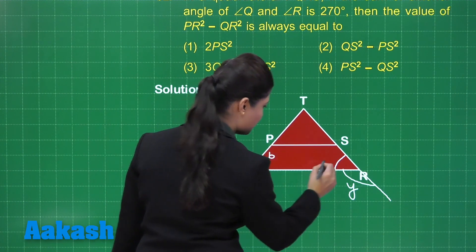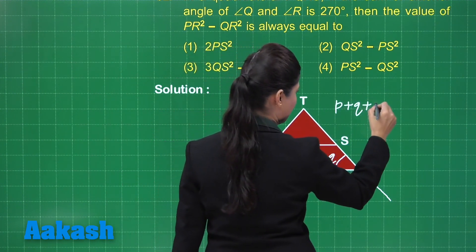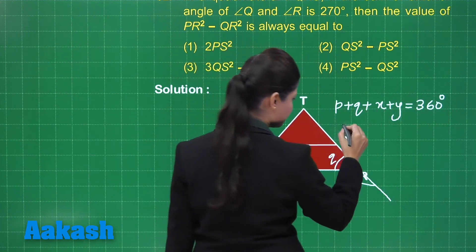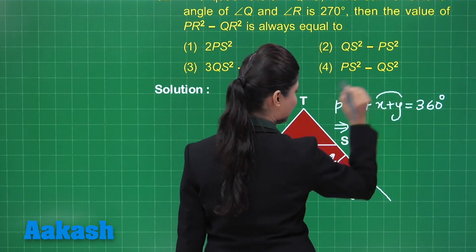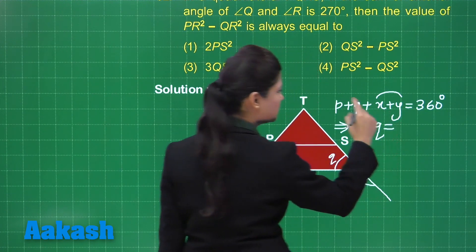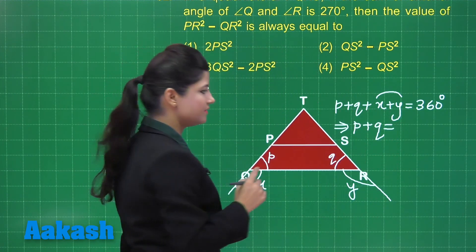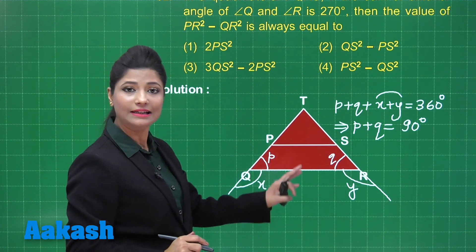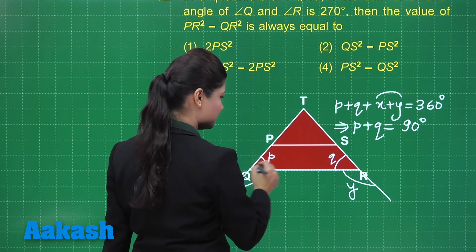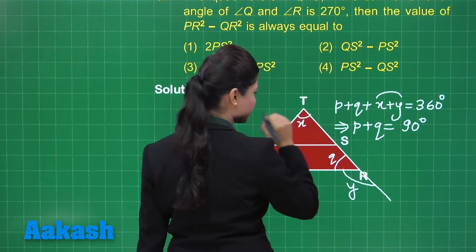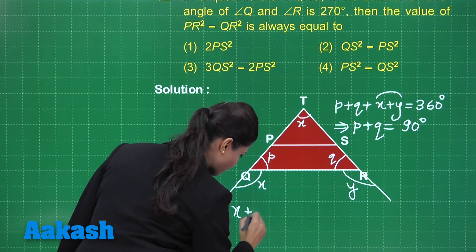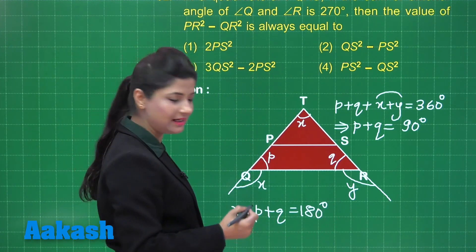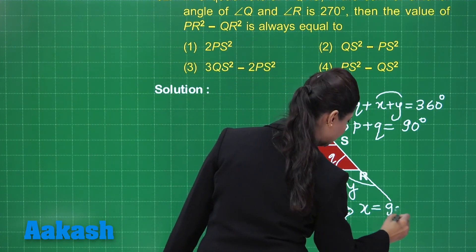Let the interior angles at Q and R be small p and small q, and the exterior angles be X and Y. Then p plus q plus X plus Y equals 360 degrees. Since X plus Y equals 270 degrees, we get p plus q equal to 360 minus 270, which is 90 degrees.